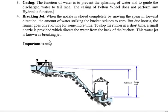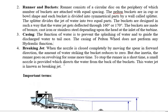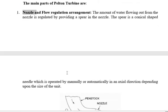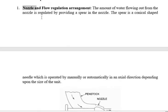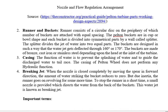In summary, the main parts of the Pelton turbine are: the nozzle along with the spearhead, which controls the fluid flow; the runner with buckets attached at its circumference; and the casing, which guides the fluid after striking the buckets to the tail race and prevents water loss.